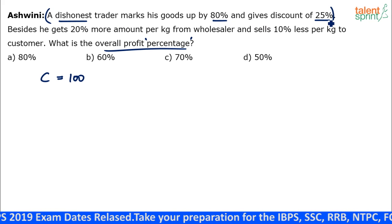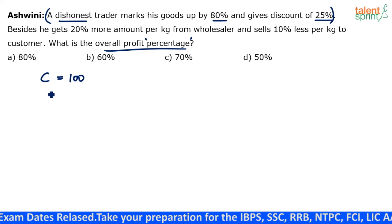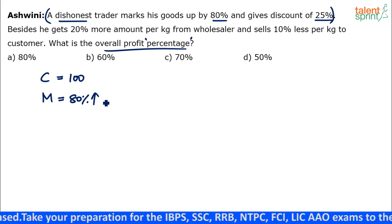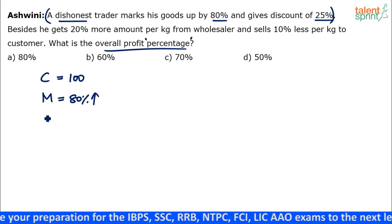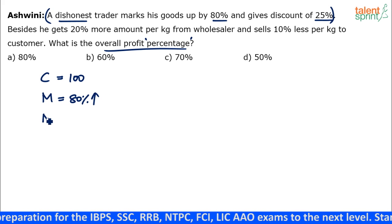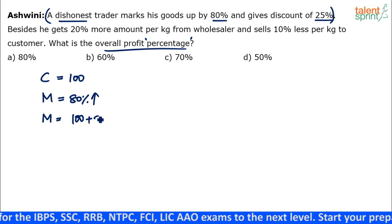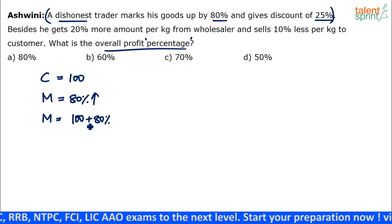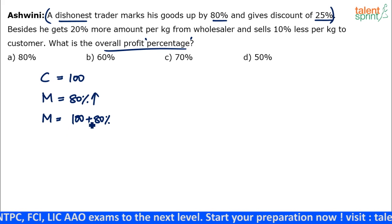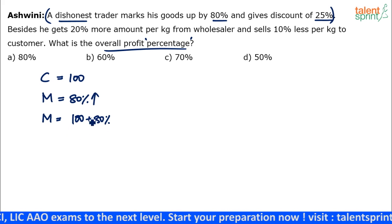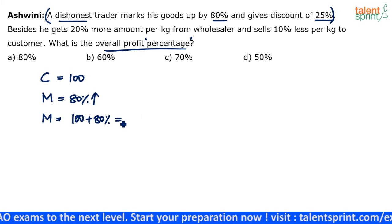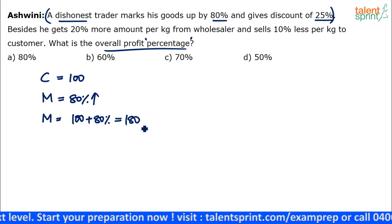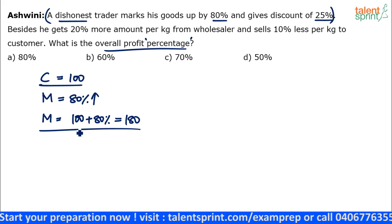Cost price is 100. He has marked up by 80 percent, so the mark price M equals 100 plus 80 percent of 100, which is 100 plus 80 = 180. So the mark price is 180.